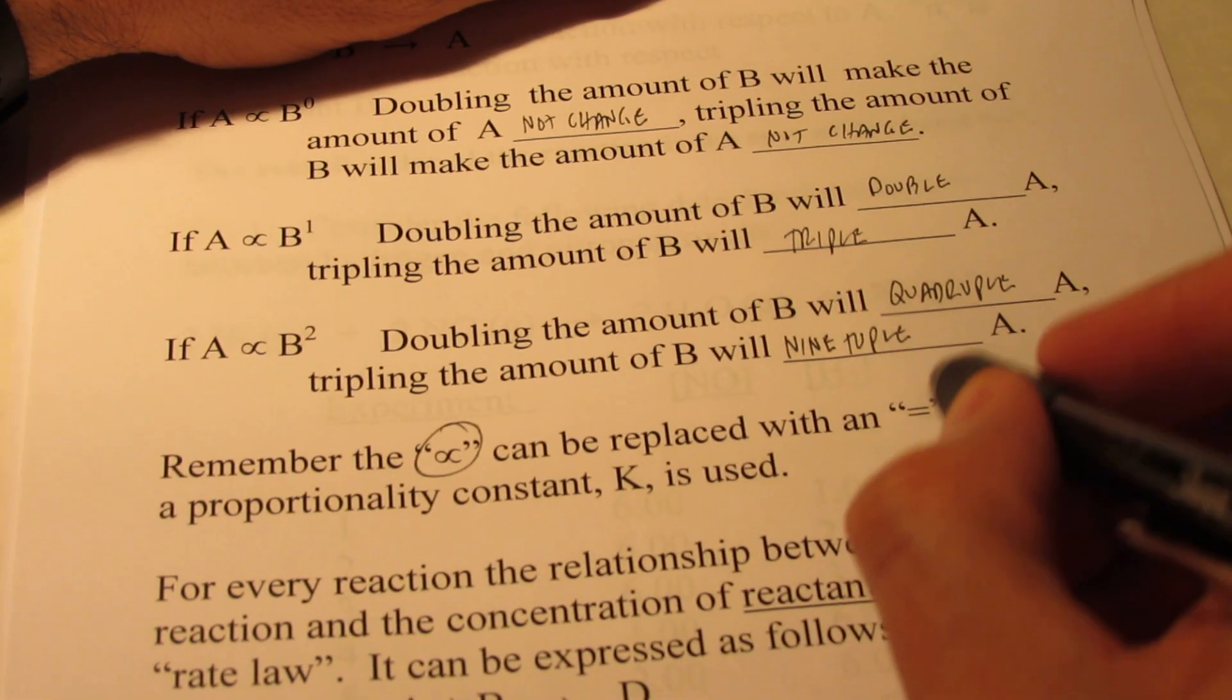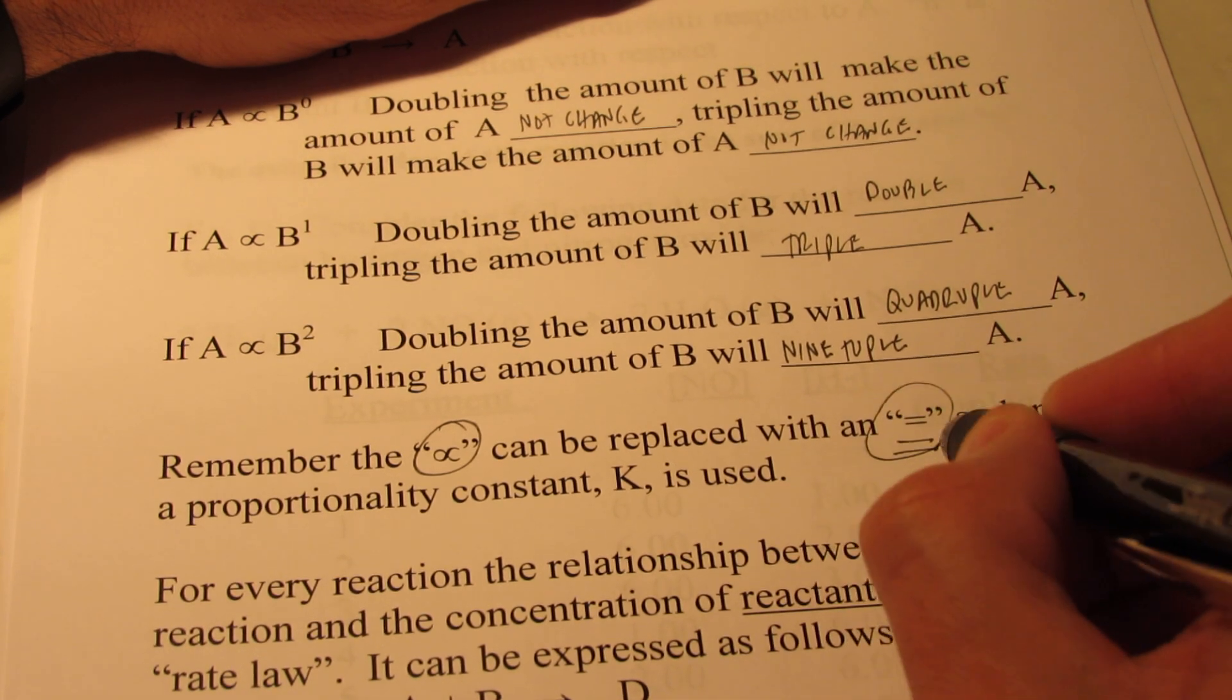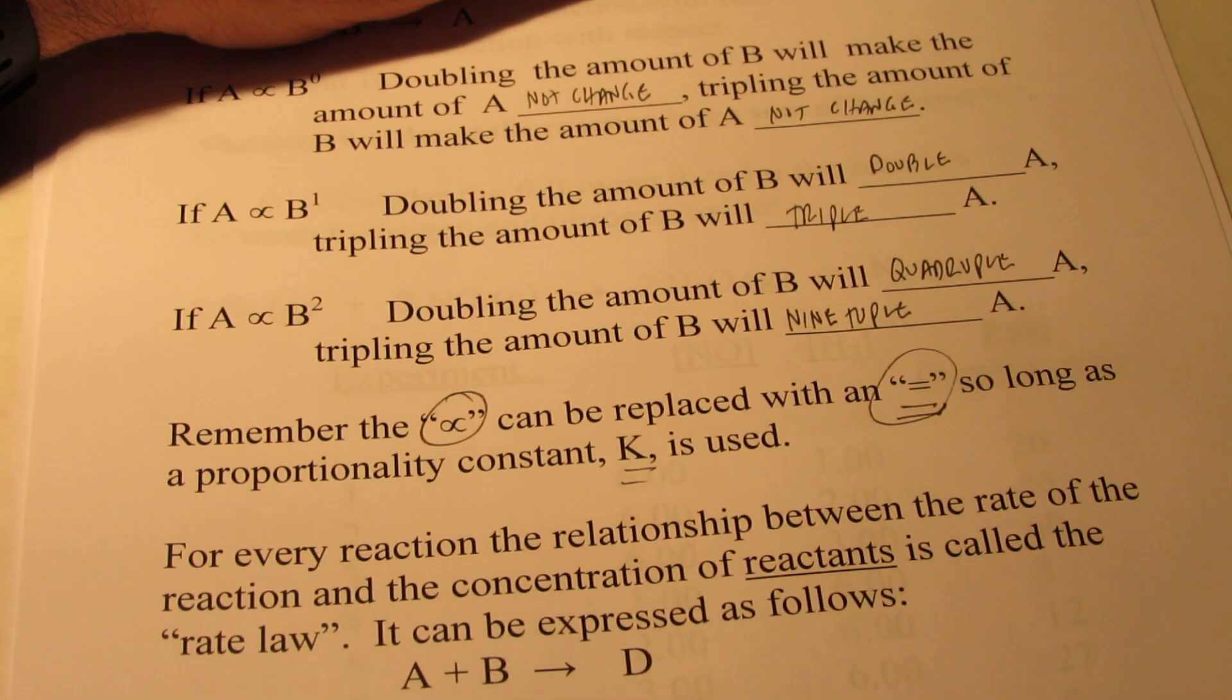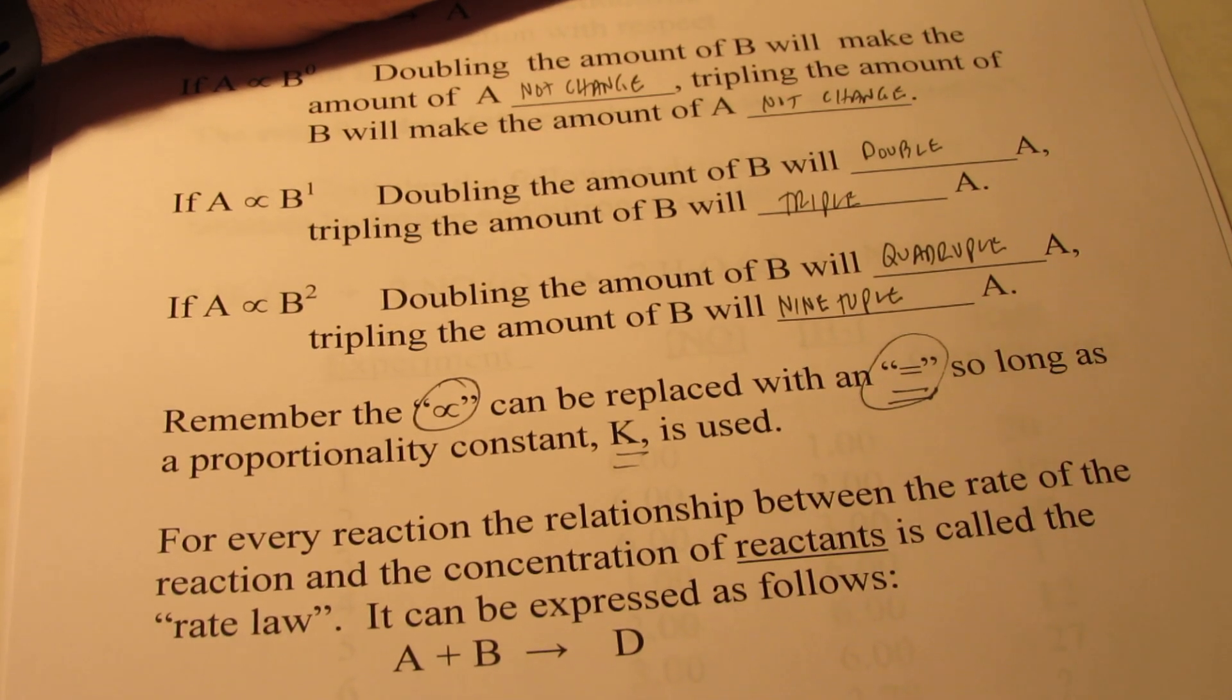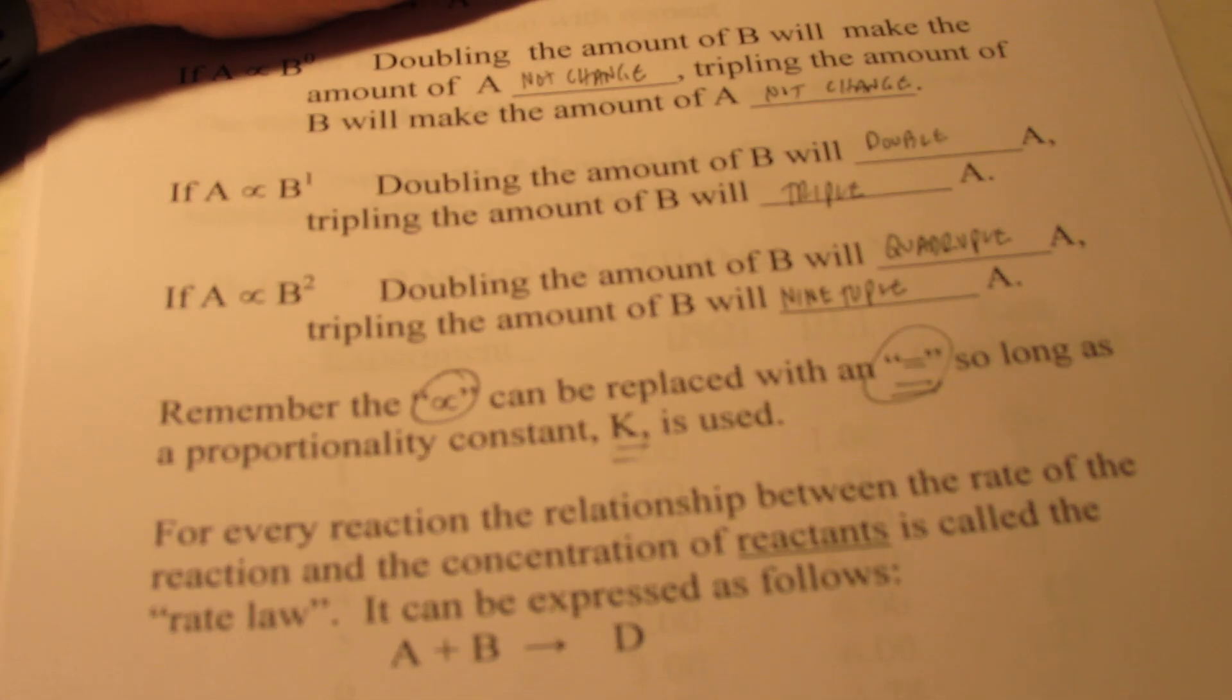Remember, this proportionality sign can be replaced with an equal sign so long as we add a proportionality or rate constant K into the mix.